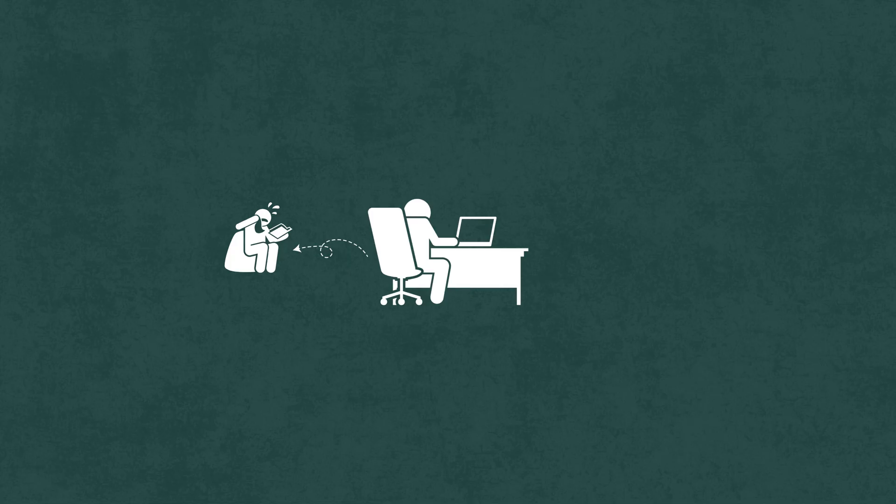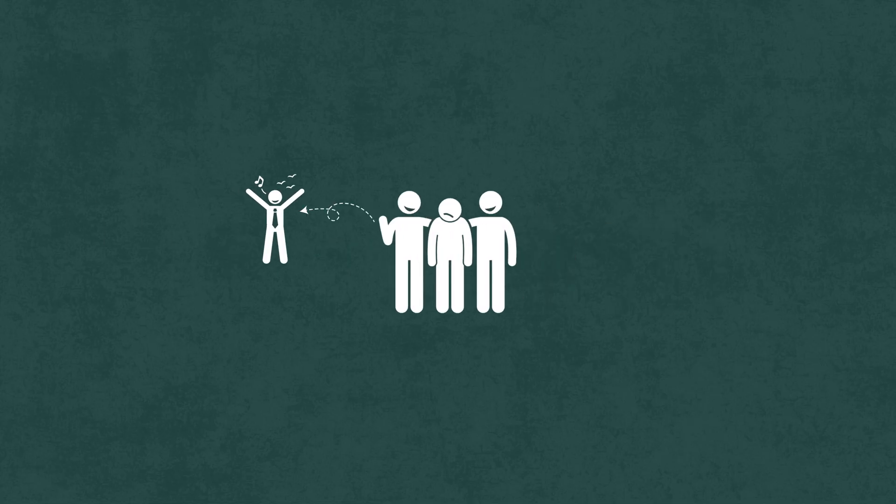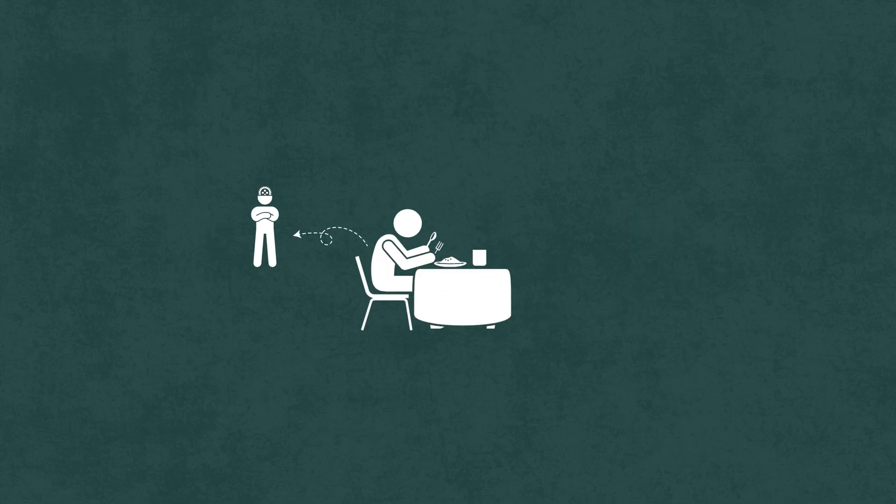On the other hand, the right breakfast can literally switch on mental clarity, stabilize your mood, and keep your energy steady. That's why this video isn't just about what you eat. It's about how you can hack your brain's morning chemistry to stop sabotaging your productivity.